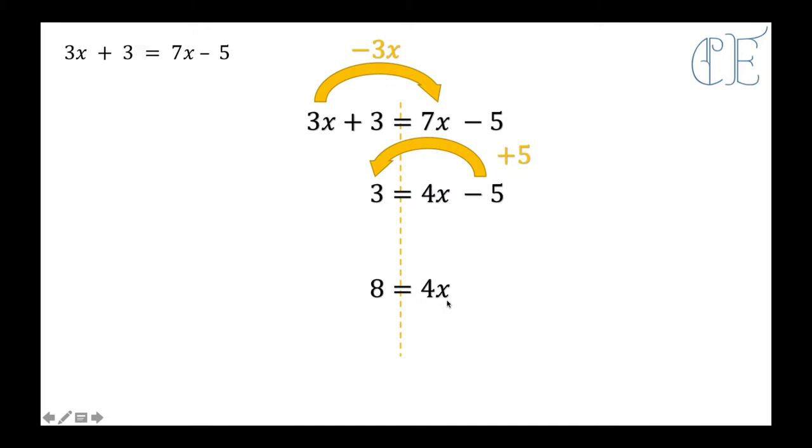So I need to do my final step, which is to get X all by itself. At the minute, X is being multiplied by 4, so in order to move that 4 out of the way I need to divide by 4. And 8 divided by 4 is 2, so 2 equals X.